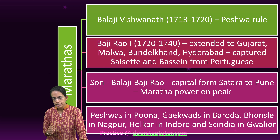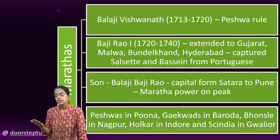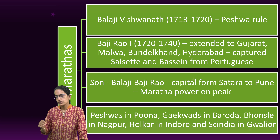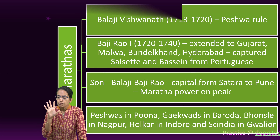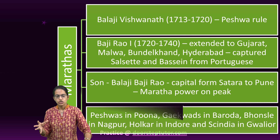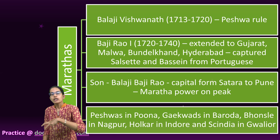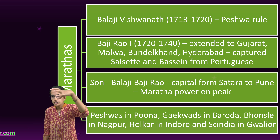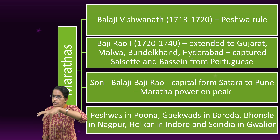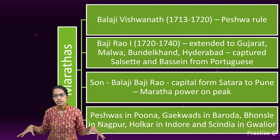Maratha power started to build up during this time. After Balaji Bajirao, four Peshwas followed and the power was divided into groups. Finally, there was the Maratha Confederacy — five different regions which came together: Peshwas in Pune, Gayakwars in Baroda, Bhonsle from Nagpur, Holkar from Indore, and Sindhias from Gwalior.